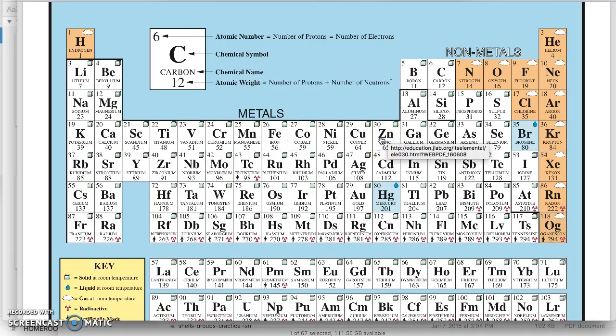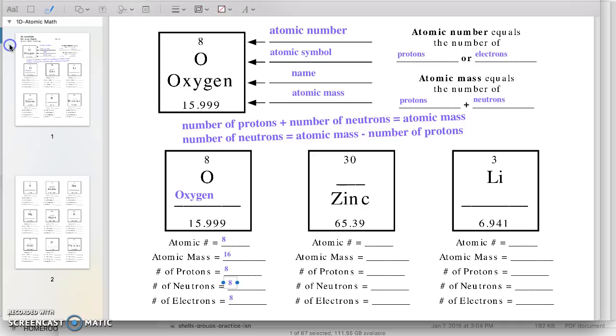And zinc's atomic symbol is capital Z, lowercase n. The capital letters and lowercase letters do make a difference here. So please make sure you're following that. So zinc's atomic symbol is capital Z, lowercase n.